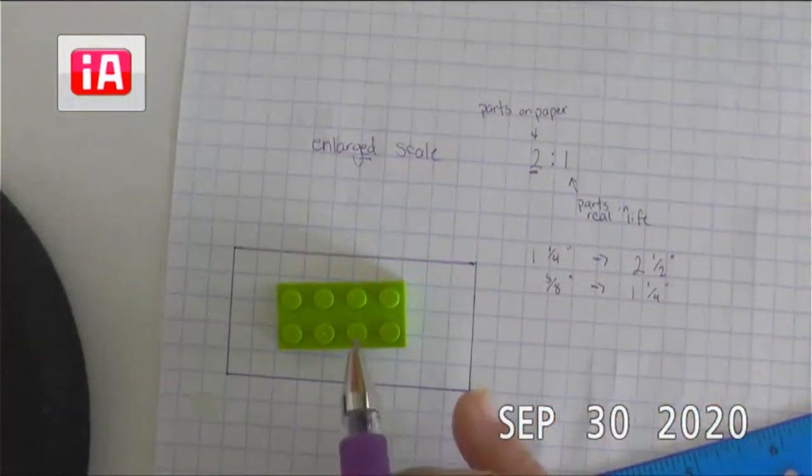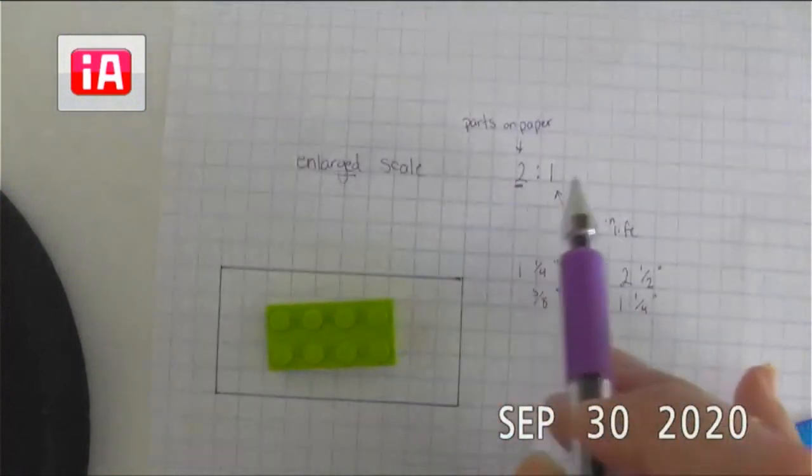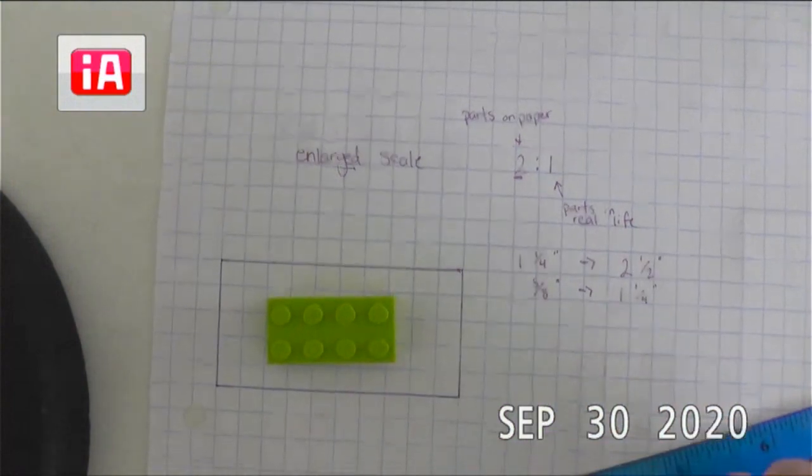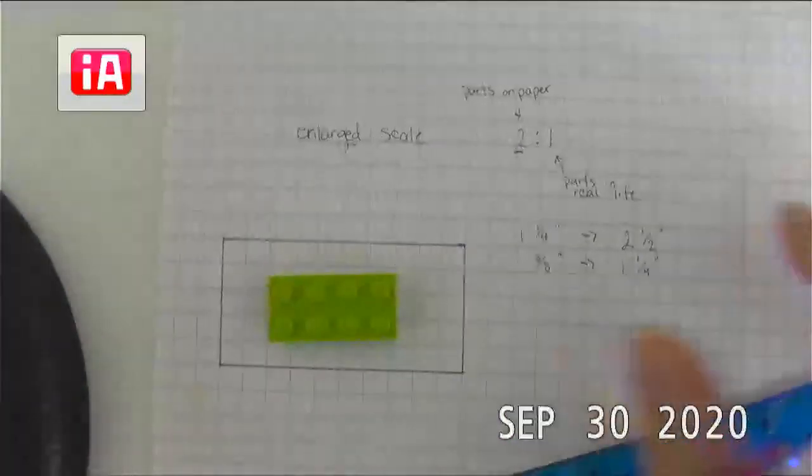So this drawing is an enlarged scale version of this Lego. Specifically, it is a two-to-one drawing, meaning the drawing is twice as large as the object is in real life.